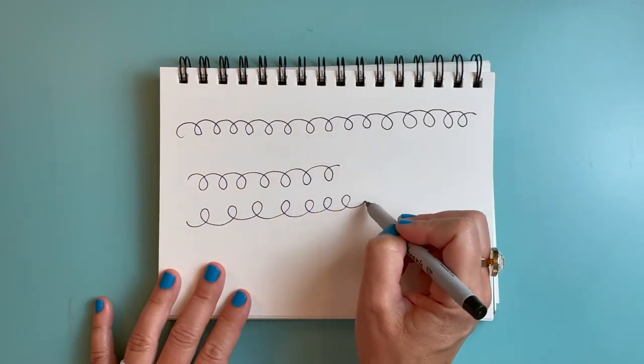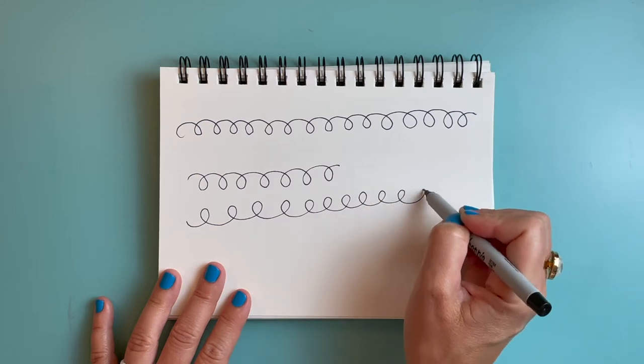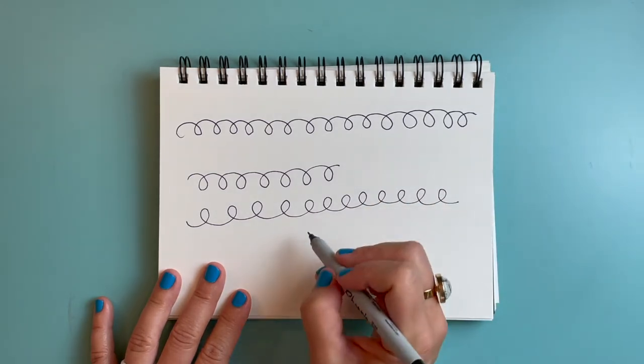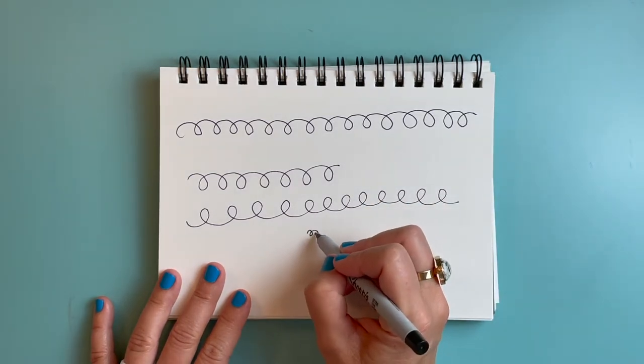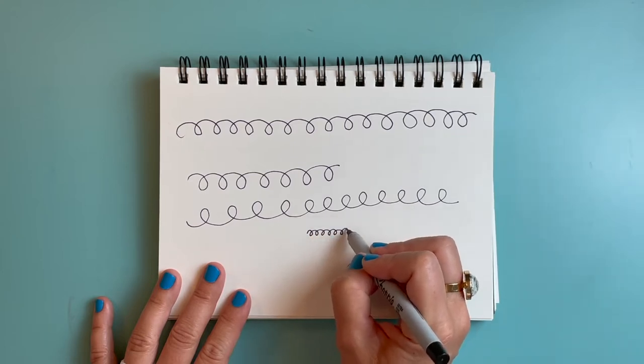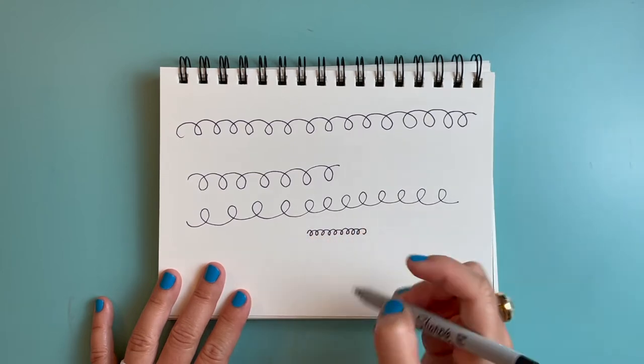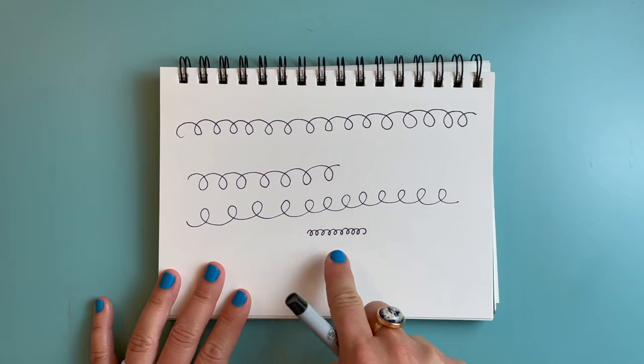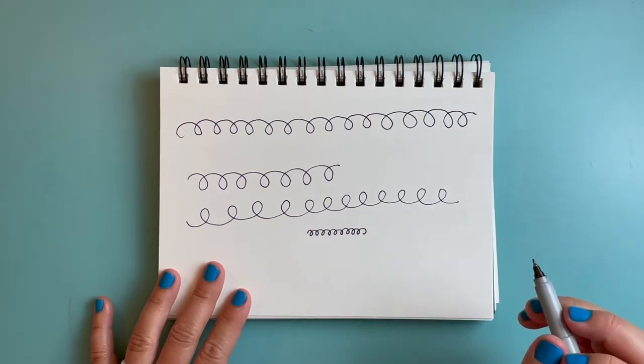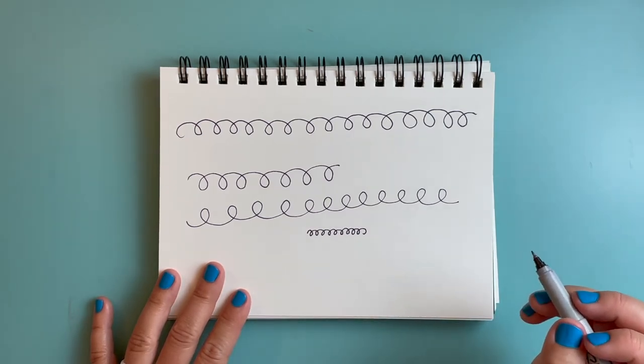Whatever you do, I would practice drawing some big curly lines like this and practice drawing some tiny little curly lines like this. Because we're going to be using some tiny curly lines for our curly doodle curly poodle.